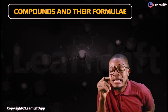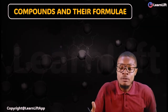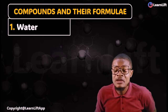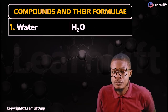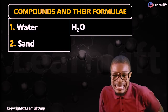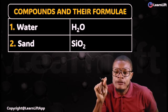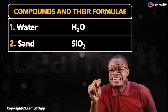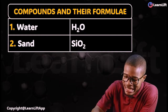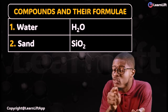You must know compounds and their formulas. Number 1 is water — H₂O. Number 2 is sand — SiO₂. Silicon oxide is called sand; some people call it silica. If I ask you these formulas — even in a dream — you should be able to tell me all of them.